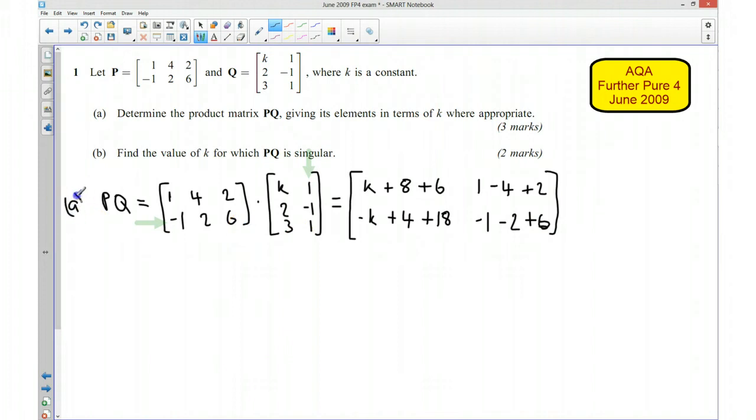So that's what we've got so far, and I'm just going to simplify that and tidy that up. And that should give me, I've got 14 plus k, and then I've got negative 1, 22 take away k, and then I've got 3. Okay, and there you go. So that is going to be our answer for part A.